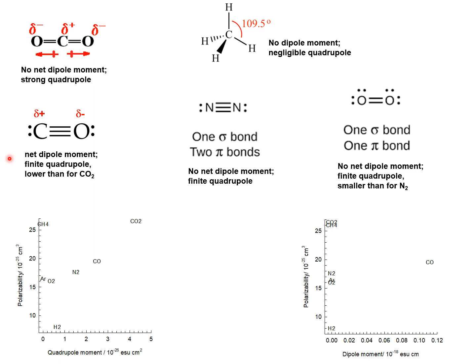Let us examine the key properties such as polarizability, dipole moment, and quadrupole moments of gas molecules such as carbon dioxide, methane, carbon monoxide, nitrogen, and oxygen.